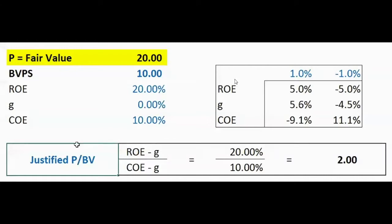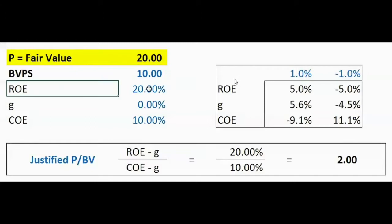Let's work through an example with a stock. We looked up the bank's balance sheet and found a book value per share of 10 — that's shareholders' equity divided by number of shares. We then calculate the ROE and found it's 20%.